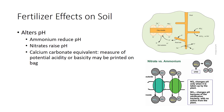The measure of potential acidity or basicity may be printed on fertilizer labels as a calcium carbonate equivalent. For potential acidity, the number represents how many pounds of pure calcium carbonate will be neutralized by the acidity of one ton of fertilizer, while potential basicity represents pounds of pure calcium carbonate that will have the same basifying effect as one ton of fertilizer. In either case, the higher the number, the stronger the reaction.